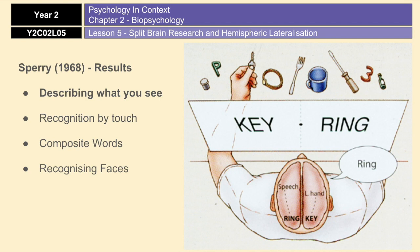Normally, the two hemispheres would communicate, so it wouldn't matter which visual field the stimulus was flashed into, because the hemispheres would be talking to each other and you'd be able to say what you saw. But in split brain patients the two hemispheres aren't communicating, so the right hemisphere cannot verbalize what it saw.